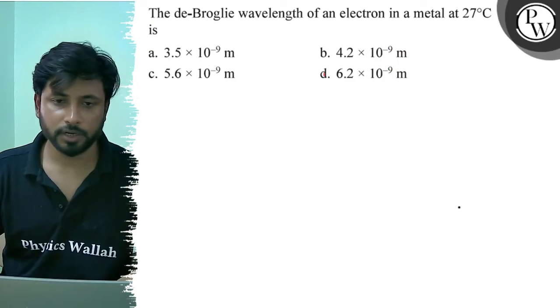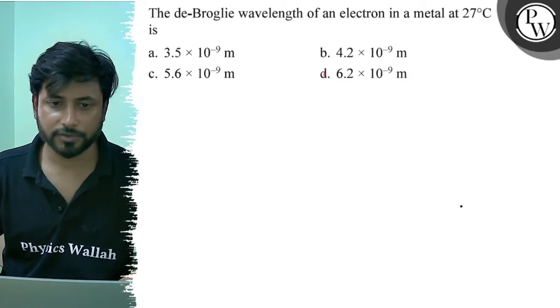Hello, let us see this question. The de Broglie wavelength of an electron in a metal at 27 degrees Celsius is